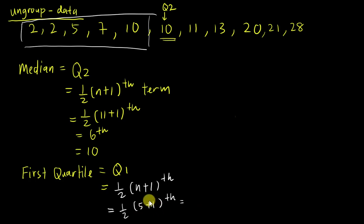So this is 6 over 2, which is the third number will be my Q1. So where is my third number? 1, 2, 3. So this number will be my Q1, which is 5.